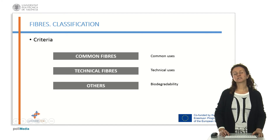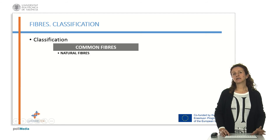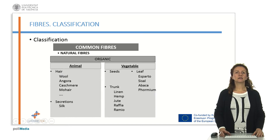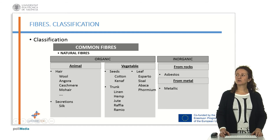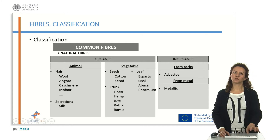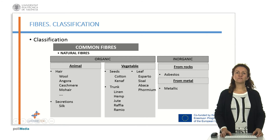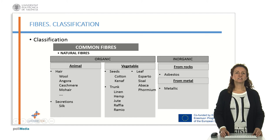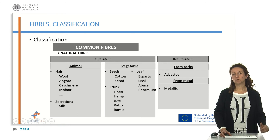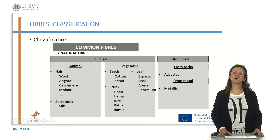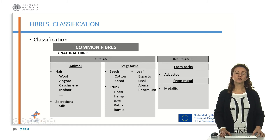If we focus on common fibres, we can say that we have natural fibres and chemical fibres. The natural fibres are classified depending on the kind of polymer found inside the fibre — the organic ones or inorganic. Inside the organic classification, the polymer can be obtained from animals or from vegetables. For animal fibres, the polymer will be a protein transformed into a fibre depending on the kind of animal that produces it. For example, if it's the hair of the animal we can find wool, angora, cashmere, or mohair depending on the animal, and if it's a secretion from the animal then we have silk.